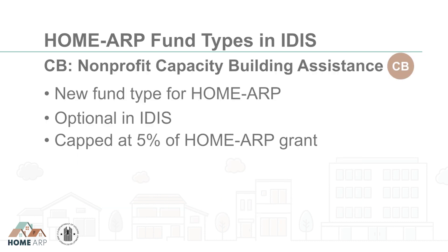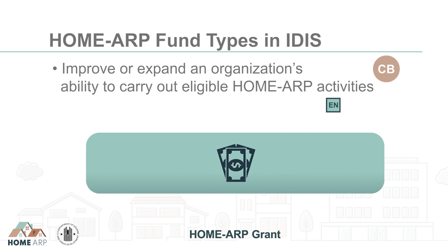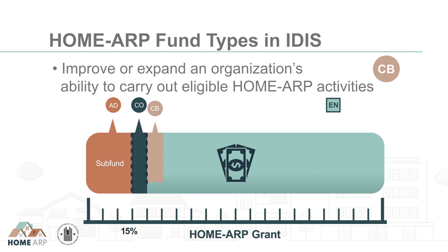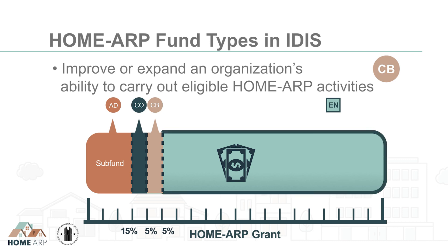CB, Nonprofit Capacity Building Assistance, is also an optional subfund. If the PJ would like to use this fund type, the subfund must also be manually set up by the PJ. CB is a new fund type for HomeARP and is also capped at 5% of the HomeARP grant. Capacity Building Assistance is provided to nonprofit organizations to improve and expand the organization's ability to provide assistance. Capacity Building Expenses are defined as reasonable and necessary general operating costs that will result in expansion or improvement of an organization's ability to successfully carry out eligible HomeARP activities.